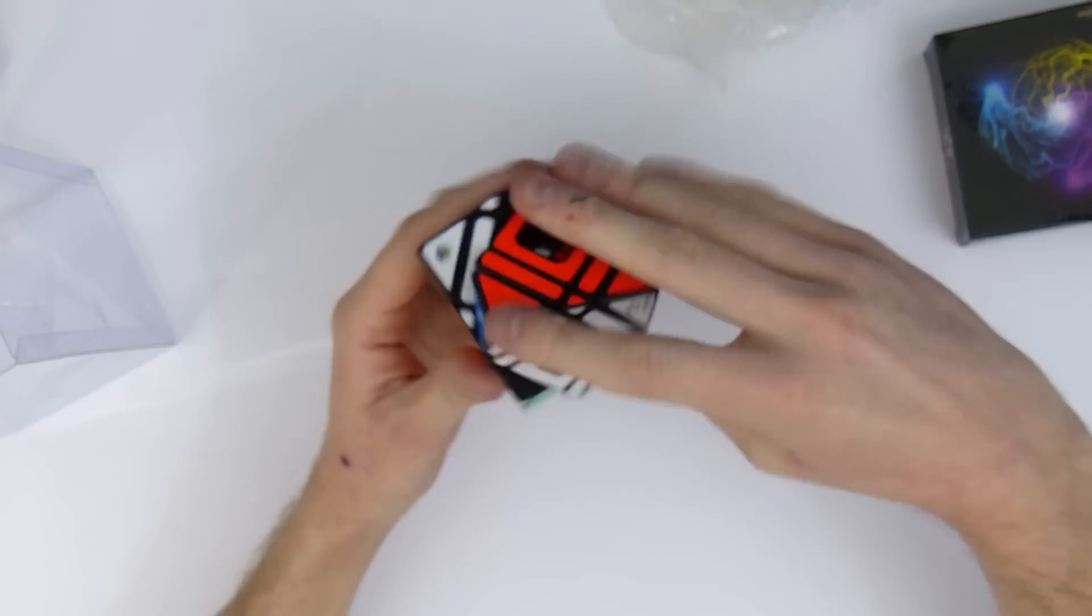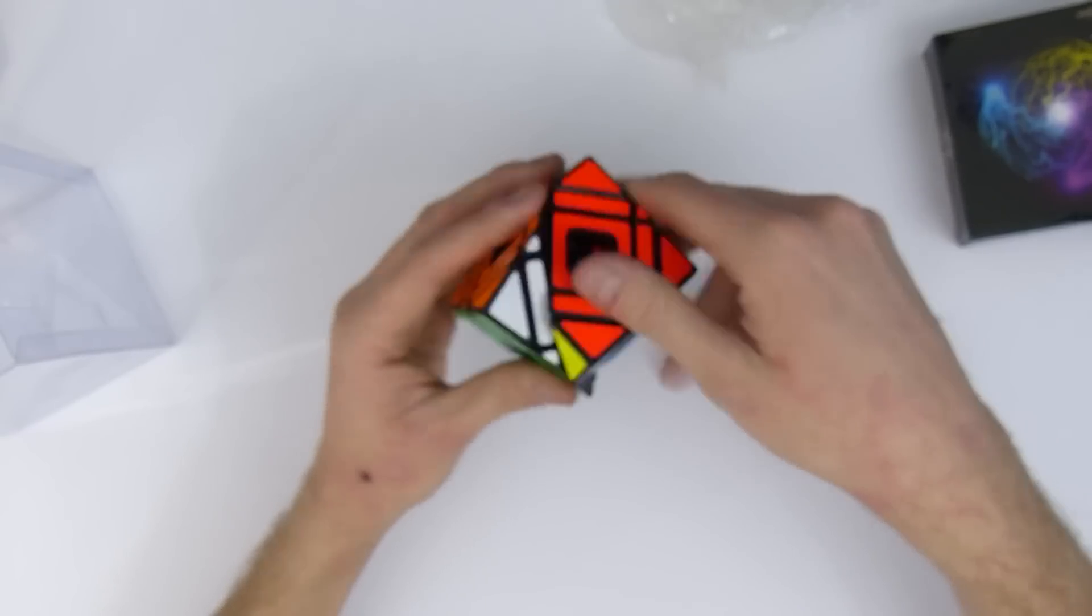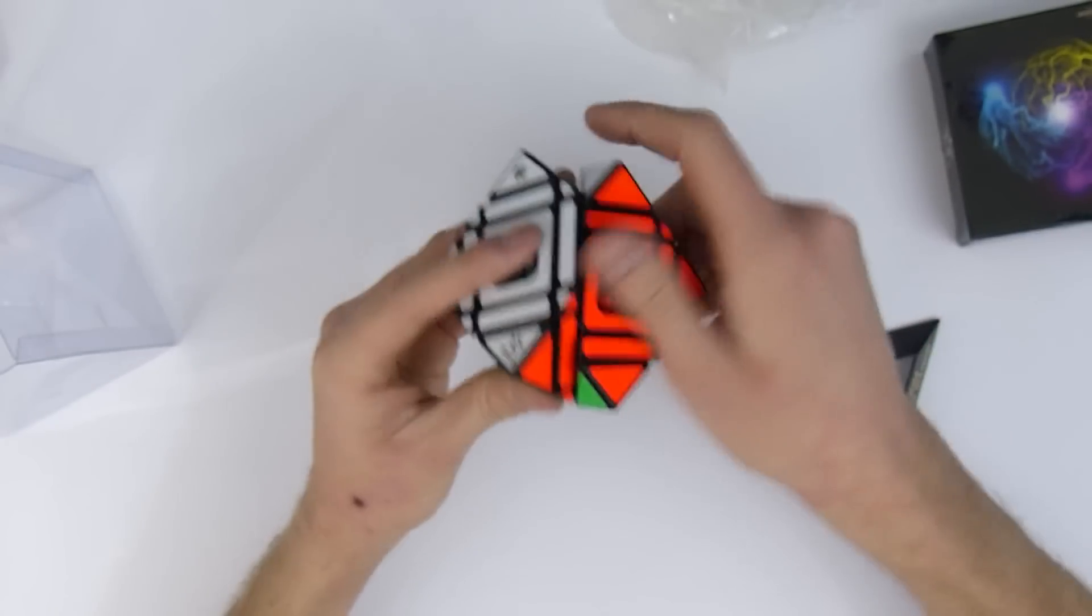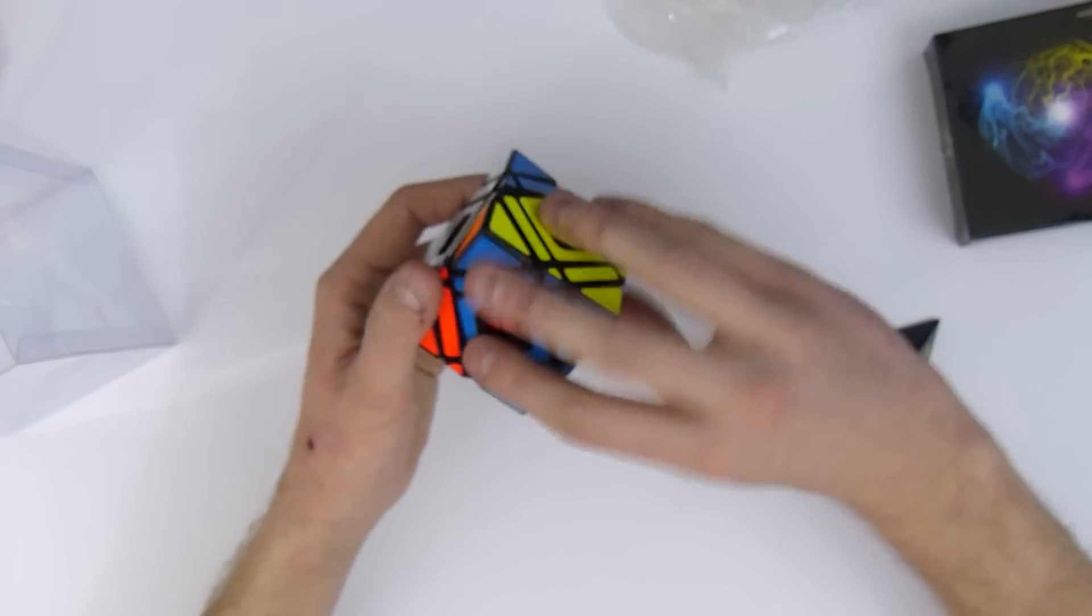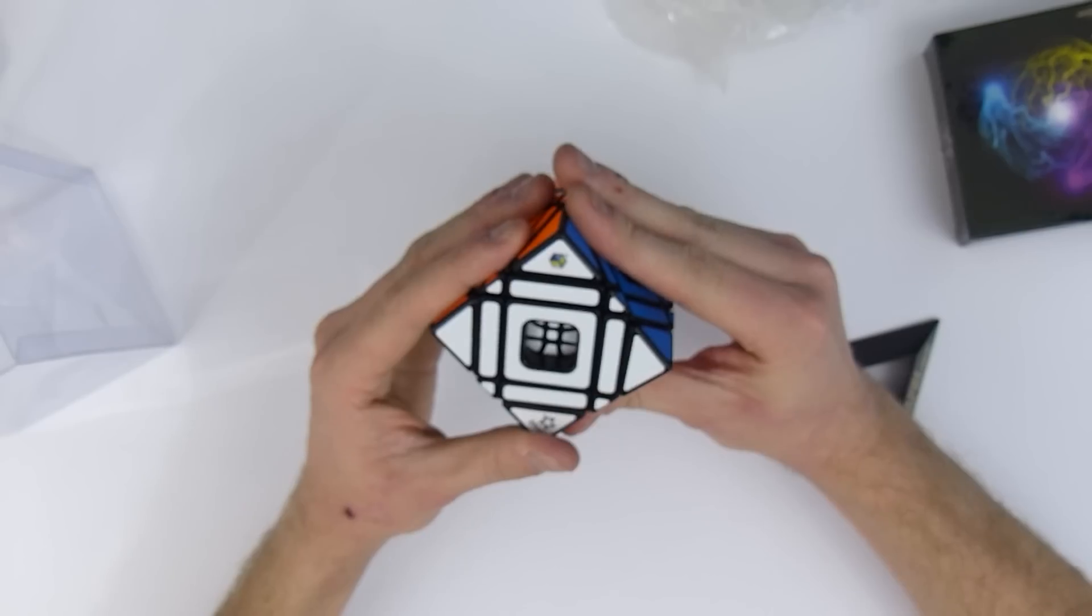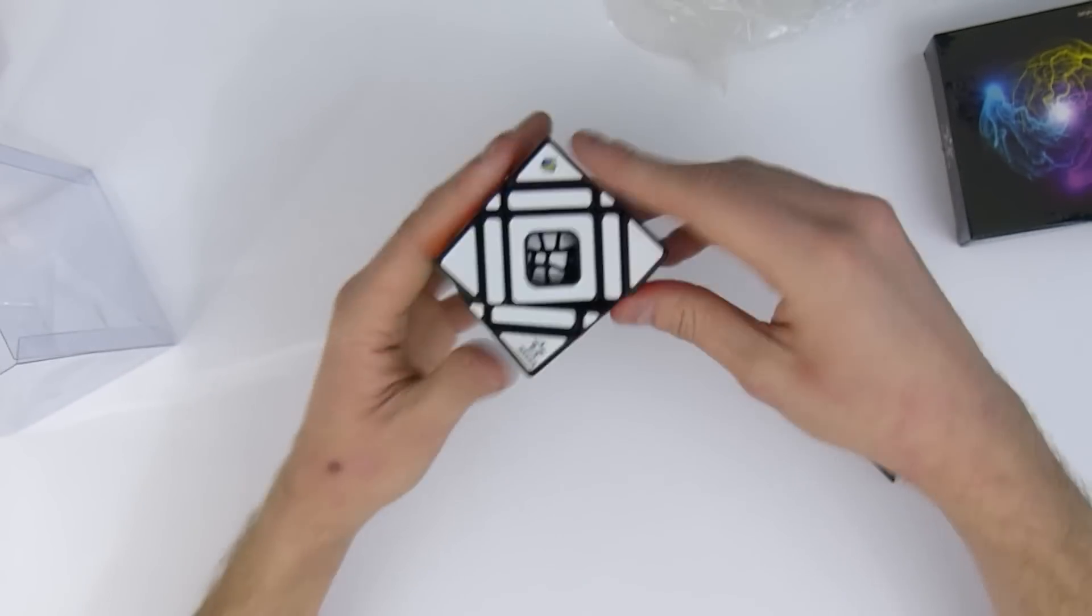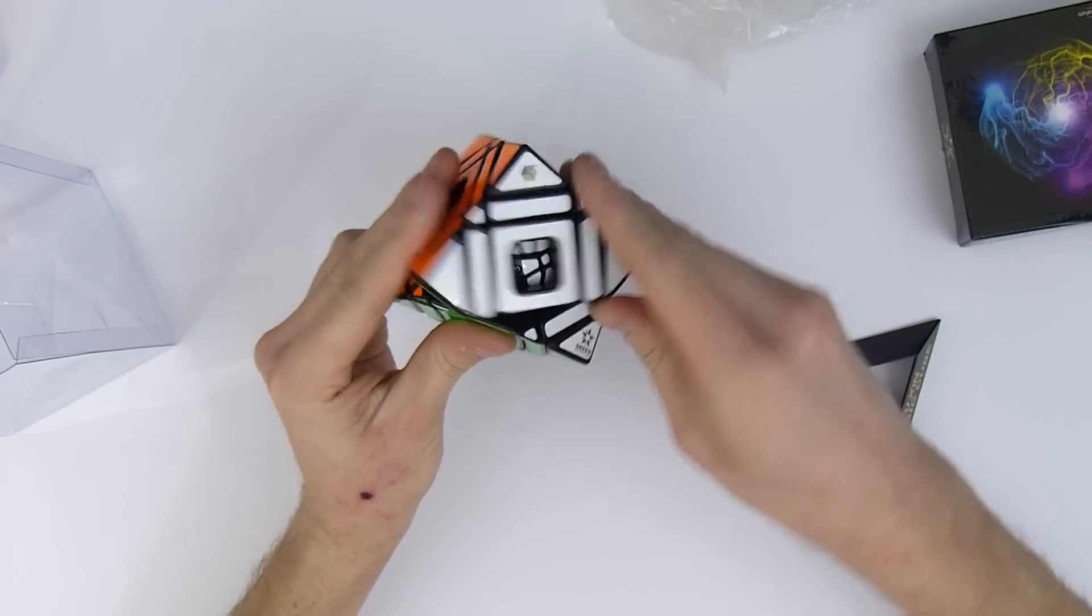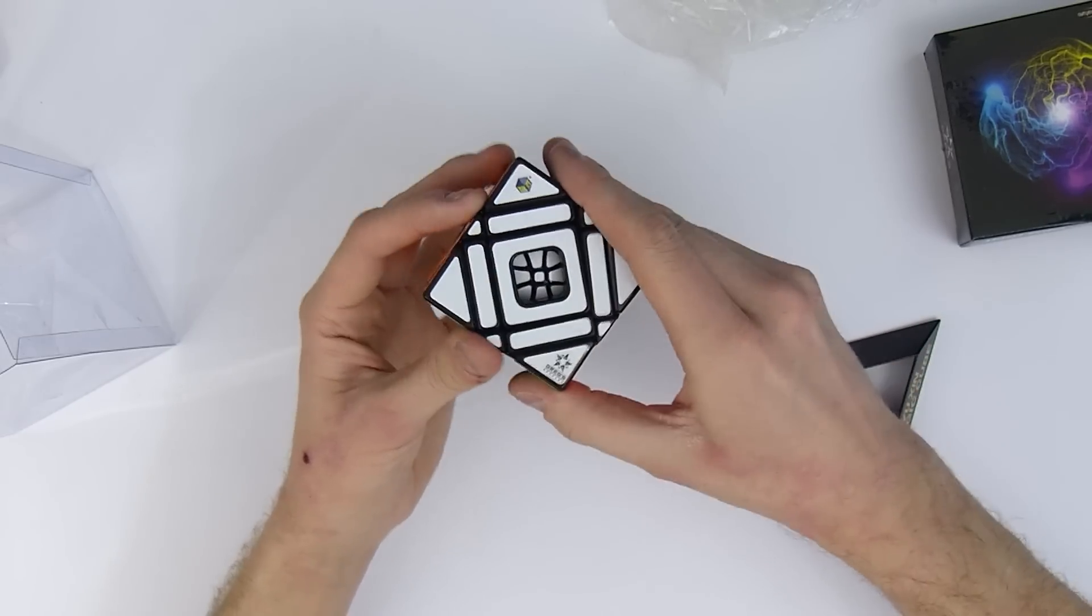I actually have the 3D printed version. Well, I don't have it right here, because it's somewhere lost between Poland and the United States. It was in the Puzzles Around the World project, but for some reason the package got lost. But this one is just incredible. The turning is great. There's corner cutting. Really good corner cutting. Like, excessive corner cutting. It spins so well.